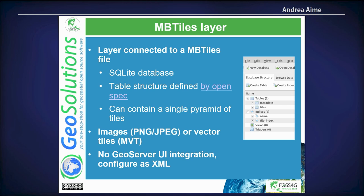Another tile source is the MB Tiles layer. MB Tiles are single-file tile caches based on SQLite — a small database with a table for tiles and a table for metadata. All the tiles are stored in this SQLite database, and they are typically fully seeded. You attach this SQLite file to GeoWebCache and it queries the right tile based on the request. Again, no blob store needed.